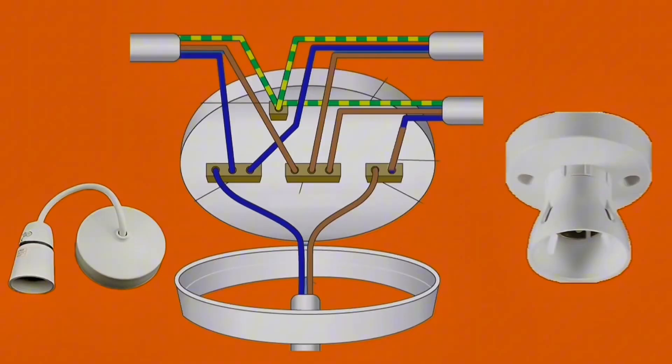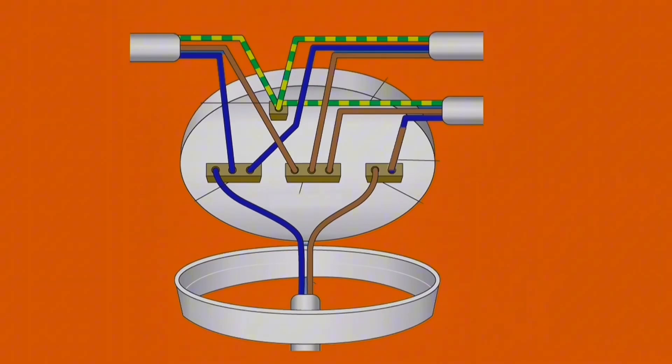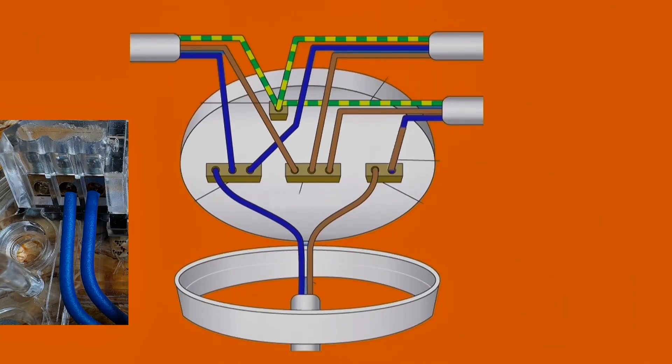This ceiling rose and pendant or batten lamp holder has been opened out to expose the terminations. The far left-hand side has a block of three identified with an N, and that's for neutral within the ceiling rose itself.